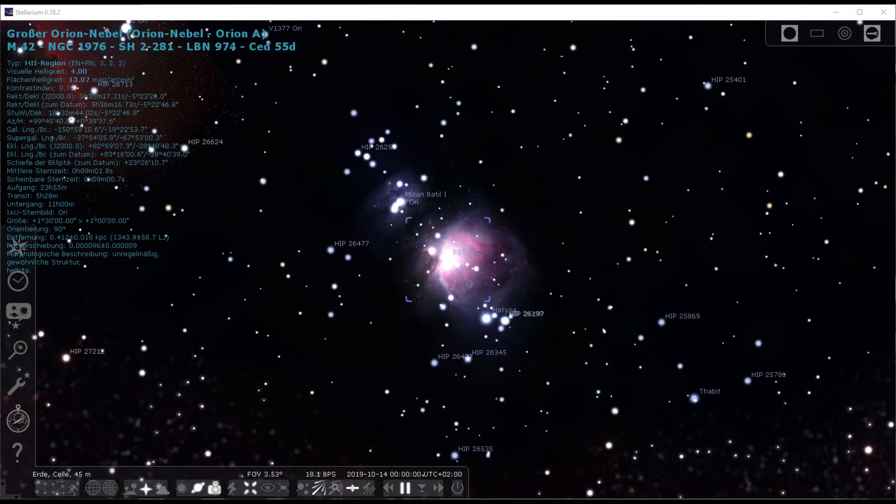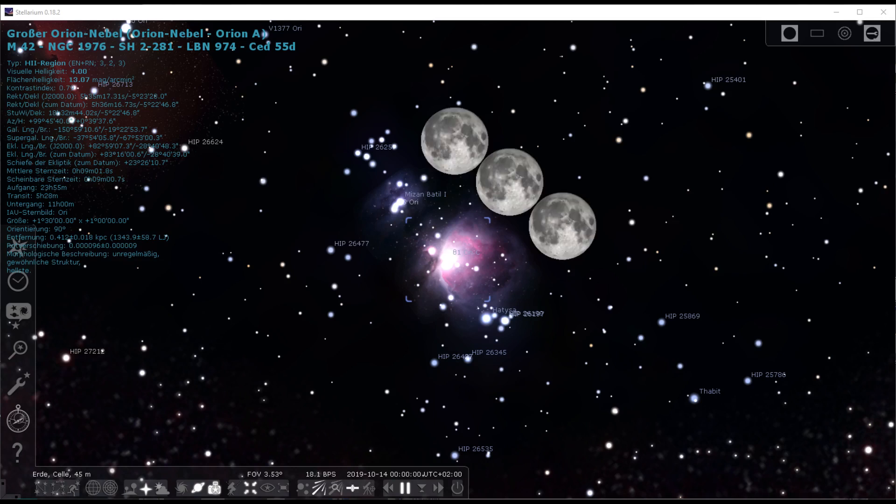Here are some nebulas in Stellarium and we are going to compare them with the familiar moon. This is the famous Orion Nebula. It has nearly three times the size of the full moon in the sky and can be spotted with the naked eye if you know where to look.